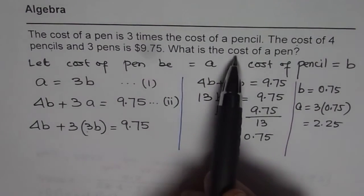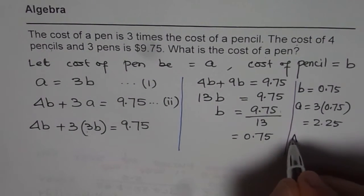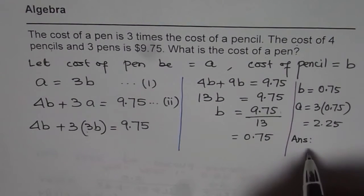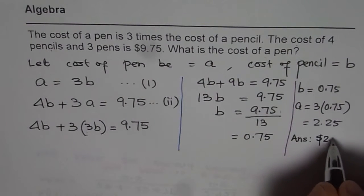Now the question is, what is cost of pen? Pen is A. So our answer is, you have to write the full sentence, cost of pen is $2.25.